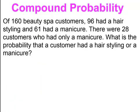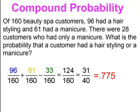Pause and try. This is similar: 160 beauty spa customers were surveyed, 96 had hairstyle and 61 had manicures. They're telling you that 28 of the customers only had manicures. So the overlap for people who had both hairstyle and manicure is 61 minus 28, which is 33. You should have gotten a probability of 0.775.